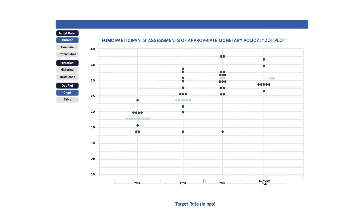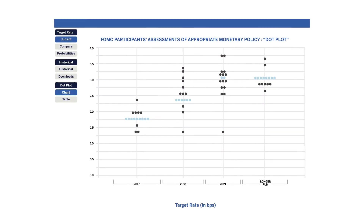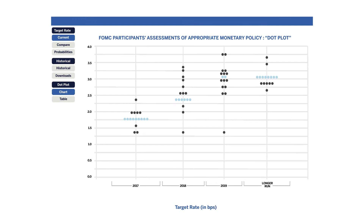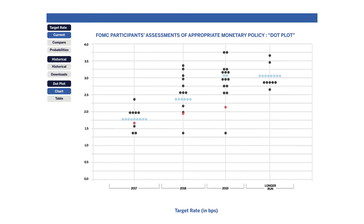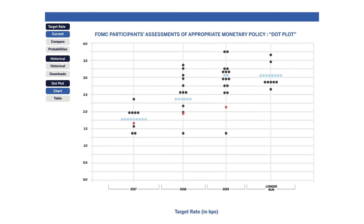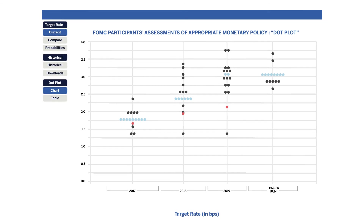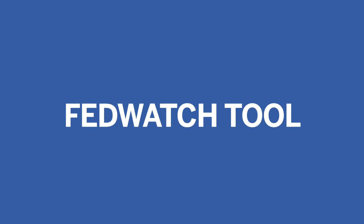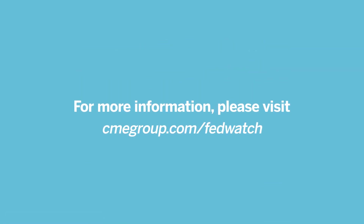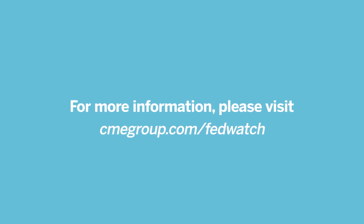The dots marked in light blue represent the median projection among the members, while the dots marked in red represent the effective rate implied by the year-end Fed Fund futures price. The CME FedWatch tool can be a valuable instrument for those managing risk or hedging against changes in Fed monetary policy. For more information, please visit cmegroup.com/FedWatch.